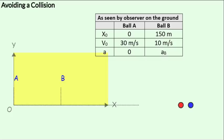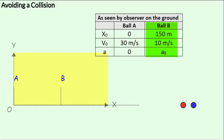From the ground frame of reference, A's initial displacement is 0, the initial velocity is 30 meters per second, which remains uniform, so there is no acceleration. From the ground frame of reference, B's initial displacement is 150 meters, the initial velocity is 10 meters per second, and we have to find the acceleration to provide B with such that a collision is just about avoided.